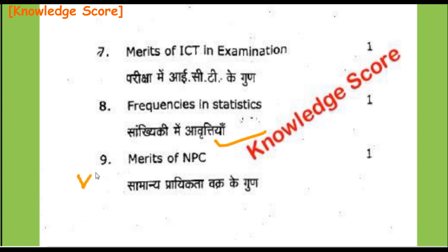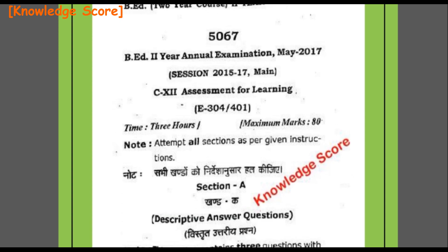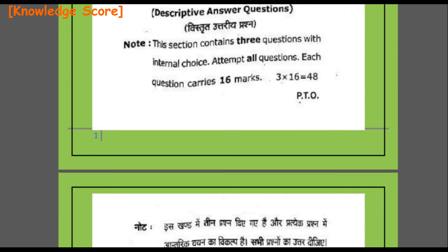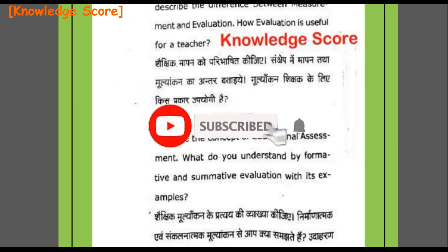Question 9, Section C: Merits of NPC — Samanya praiktata vakra ke gun. This completes Section C and the paper. All three sections — A, B, and C — have been discussed. Students, if you are new to this channel, please subscribe to Knowledge Score and press the bell icon so that you keep getting notifications related to B-8.